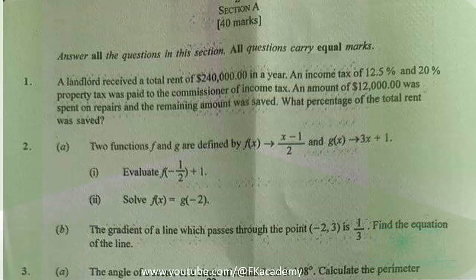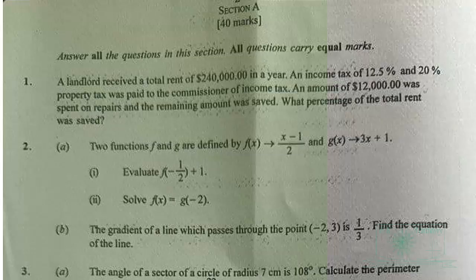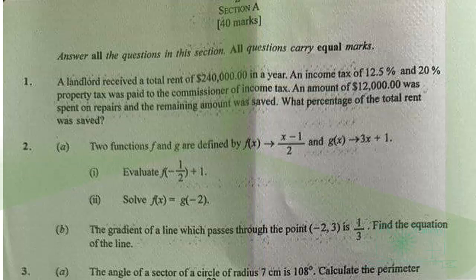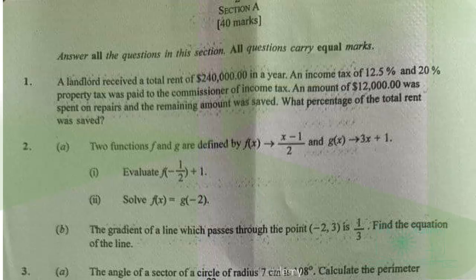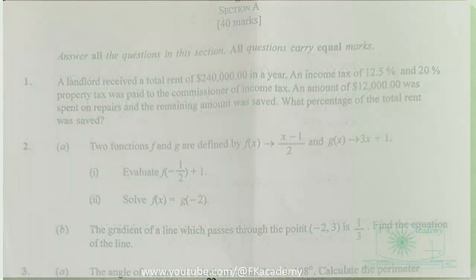The first question says a landlord received a total rent of $240,000 in a year. Income tax of 12.5% and 20% property tax was paid to the commissioner of income tax. An amount of $12,000 was spent on repairs and the remaining amount was saved. What percentage of the total rent was saved?